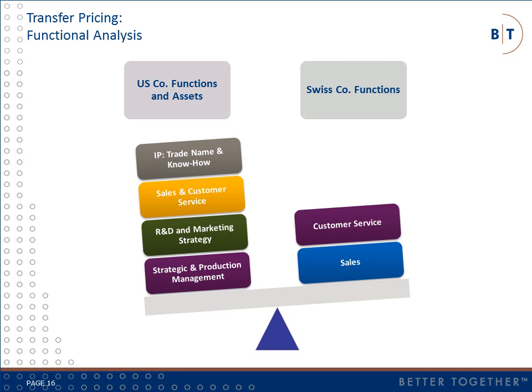Back to the functional analysis: a closer review of the functions performed and assets used shows that U.S. Co. performs a number of functions that benefit SwissCo, and that U.S. Co. owns non-routine intangible property including manufacturing know-how and the trade name associated with the product. In an unrelated situation, U.S. Co. would not perform functions or transfer valuable assets without receiving adequate compensation. The current pricing structure does not include any charges for the IP and only limited charges for support services such as finance and accounting.